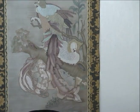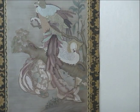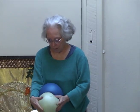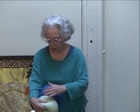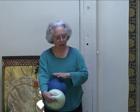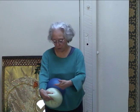At some point in our development in the embryo, we're two layers. We're an endoderm, which is the front body, and an ectoderm, which is the back body. Off of the front layer, the endoderm, we create a yolk sac, and off of the back layer we create an amniotic cavity.